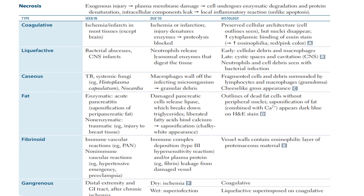We have six types of necrosis: coagulative, liquefactive, caseous, fat, fibrinoid, and gangrenous. You need to know in which type of necrosis we see particular morphological features, what caused each type, and the physiology of each necrosis.